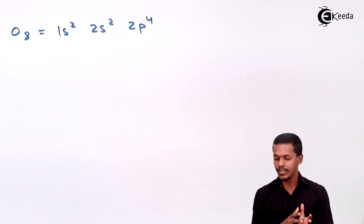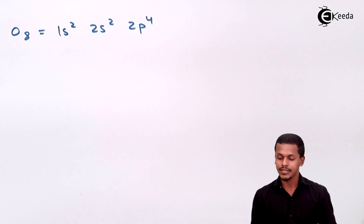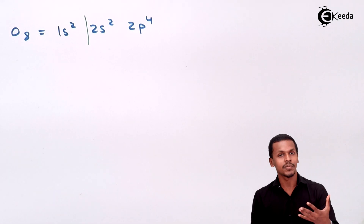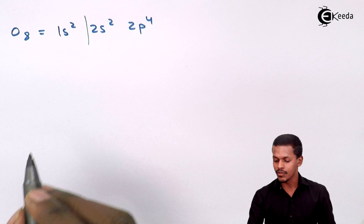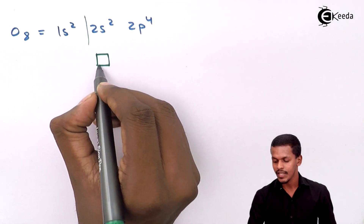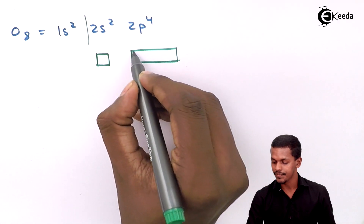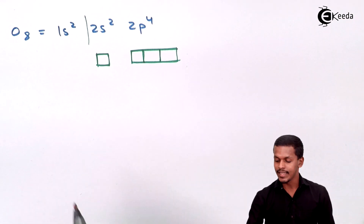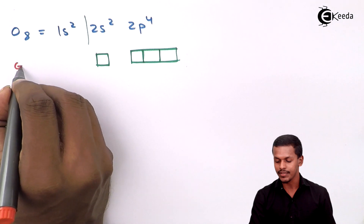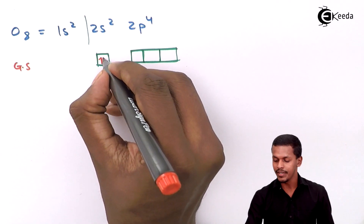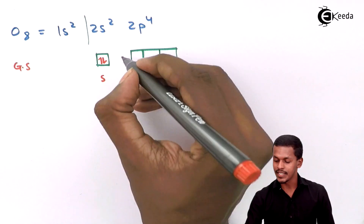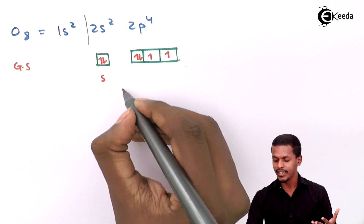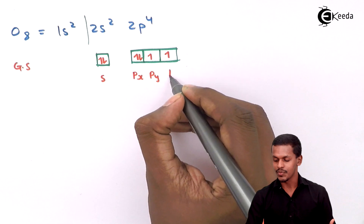Let us express the subshells also. At the outermost shell — the valence shell — we have the s subshell as well as the p subshell. The s subshell has only one orbital, while the p subshell consists of three orbitals. Now let us fill in the electrons. In the ground state, two electrons are in the s orbital, and four electrons are distributed in the p orbitals — px, py, and pz.